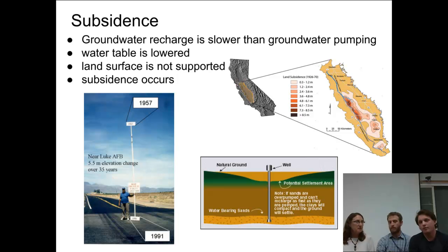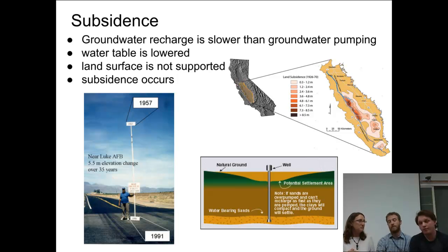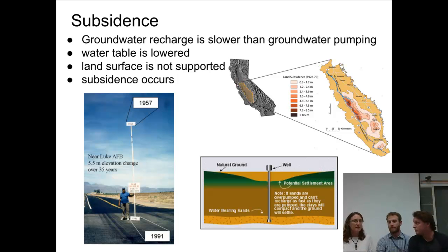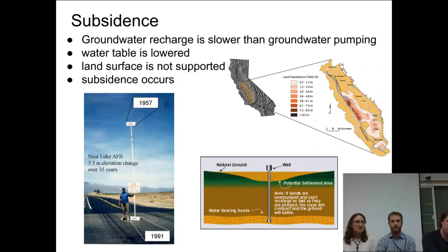Because of all that pumping, there is significant subsidence. You can see in the picture in the bottom left the level of the ground in 1957 and the level of the ground in 1991 — 5.5 meters, so that's over 15 feet. The ground has actually sunk; the level of the ground has actually declined in that time, because they've removed so much water from the aquifer underneath. That's the problem with subsidence, and with that we get some other problems.